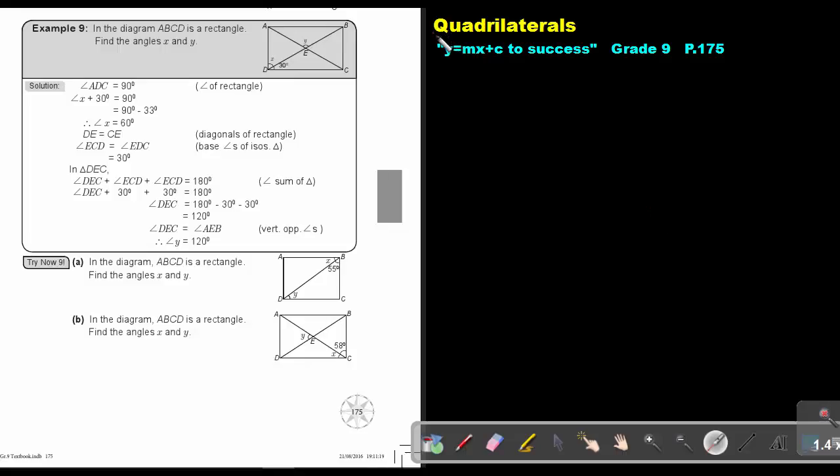Part 8. We are going to continue with quadrilaterals. You will find this on page 175 in the Namibia Mathematics Grade 9 textbook Y equals MX plus C to success.